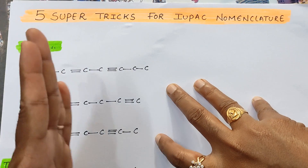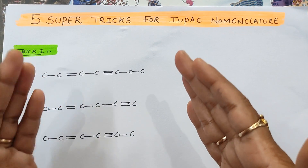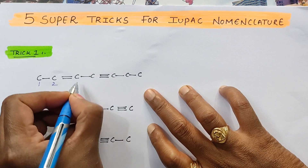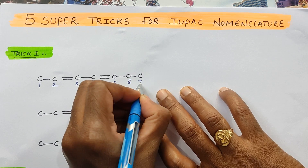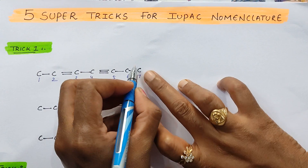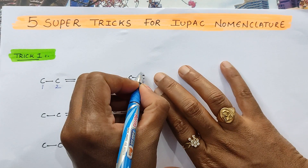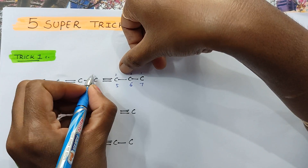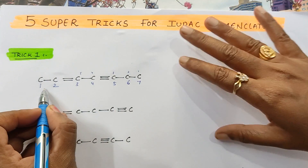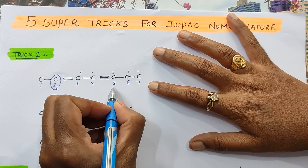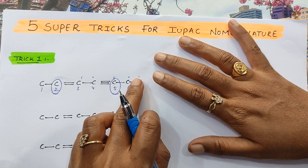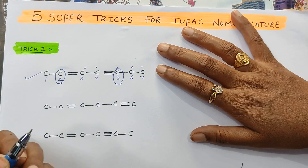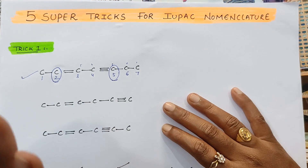If you give numbering from left to right: 1, 2, 3, 4, 5, 6, 7. If you give numbering from right to left, triple bond is getting the 3rd position and double bond is getting the 5th position. If you give from left to right, double bond is getting 2nd position and triple bond 5th position. Left to right is the correct order of giving numbering because double bond is getting the 2nd position.